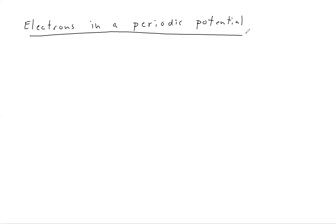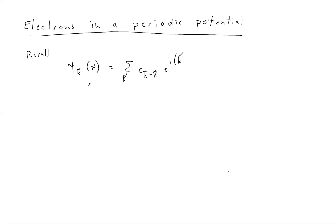We're going to explicitly calculate what happens when we allow nonzero coupling to the lattice. Let's start by remembering one form of the Bloch wave functions. If I suppress the band index n, we can write the wave function ψ with quantum number k as the sum over all reciprocal lattice vectors K of c(k minus K) times e^(i(k minus K)·r).